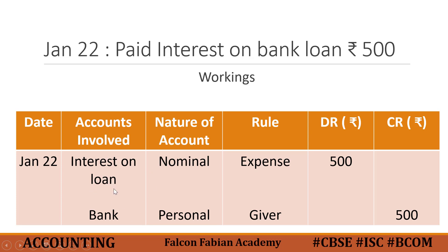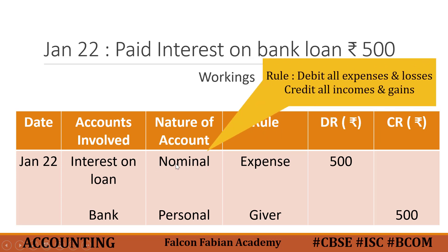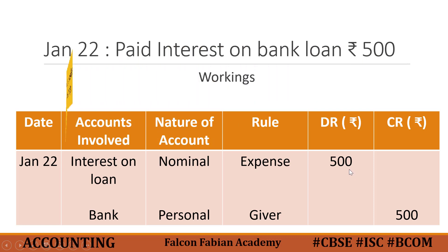Interest on loan is an expense for the business — it is a cost for the money taken from the bank. Whenever it is an expense, the rule of nominal account is applied. The rule for nominal account is: debit all expenses and losses, and credit all incomes and gains. Since interest on loan is an expense, it will be debited by 500. The second account is bank account — account of an organization — so the rule of personal account applies: debit the receiver, credit the giver. The business bank account is giving the money, so it needs to be credited by 500.